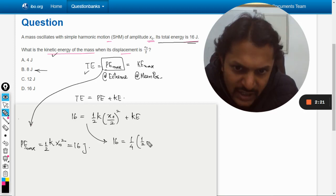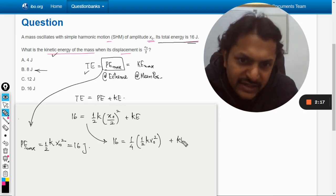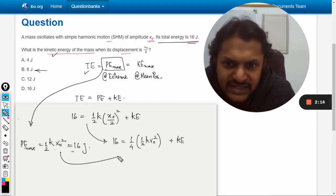So 1 by 4 into half k x_naught square plus kinetic energy.